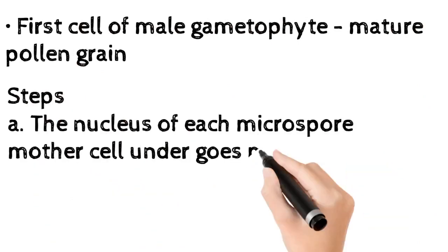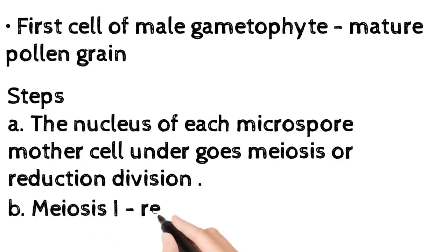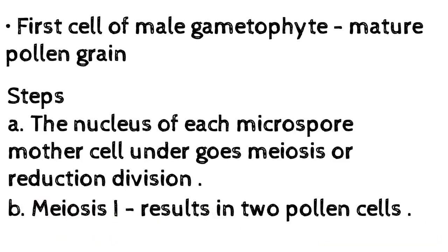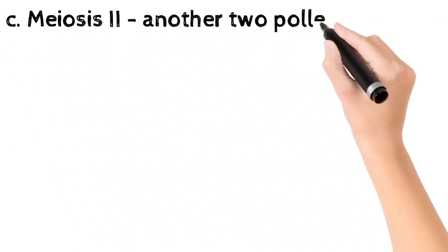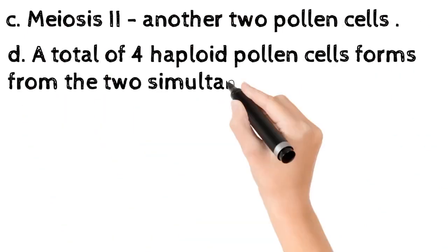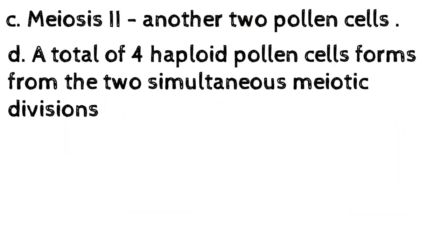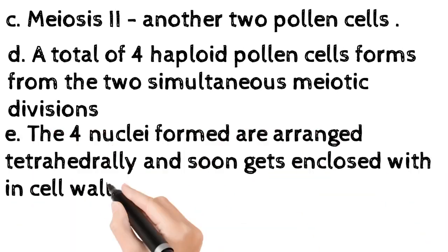Steps in the process of microsporogenesis: (a) The nucleus of each microspore mother cell undergoes meiosis or reduction division. (b) Meiosis I results in two pollen cells. (c) Meiosis II results in another two pollen cells. (d) A total of four haploid pollen cells form from the two simultaneous meiotic divisions. (e) The four nuclei formed are arranged tetrahedrally and soon get enclosed within cell walls.